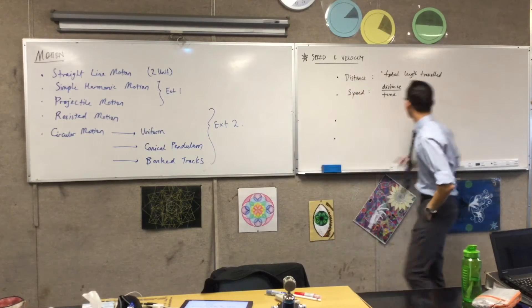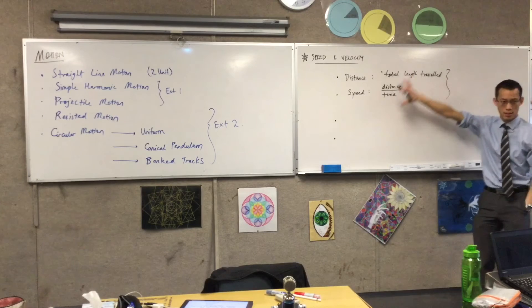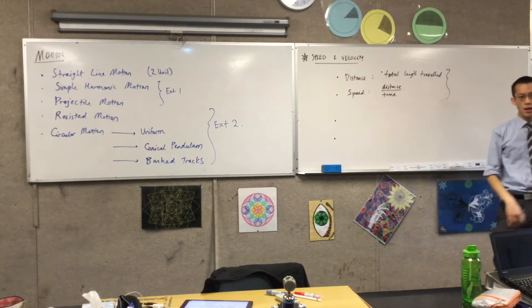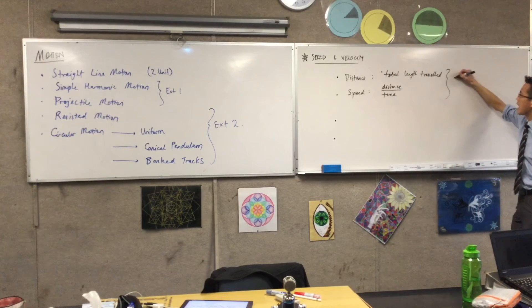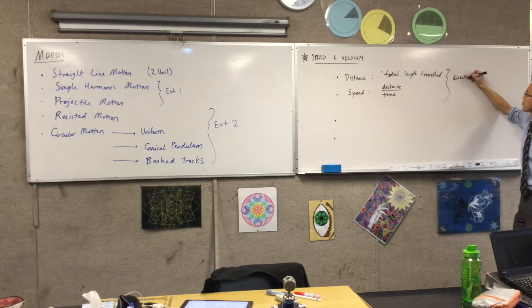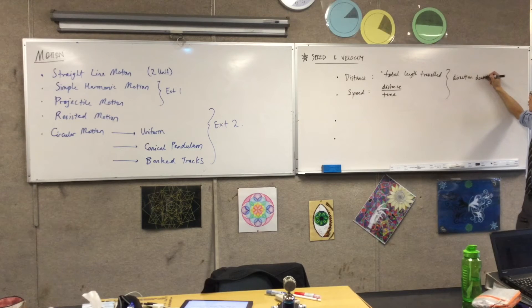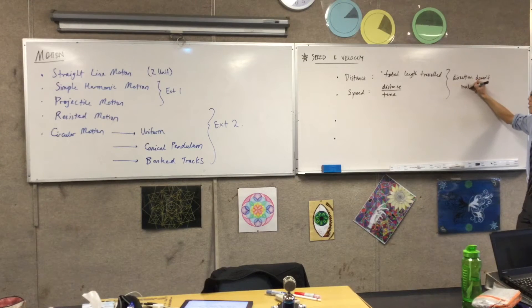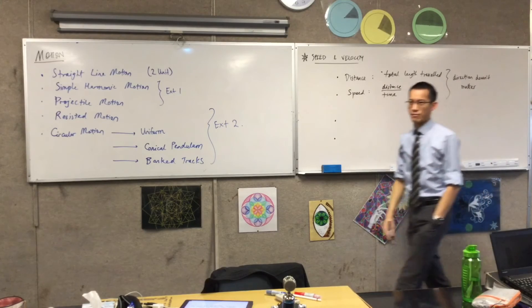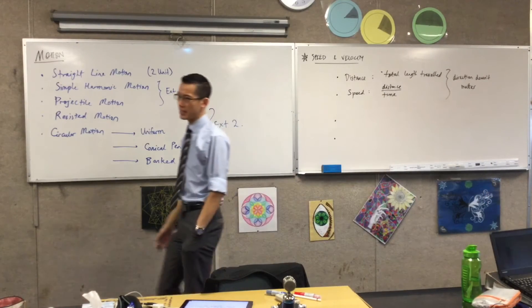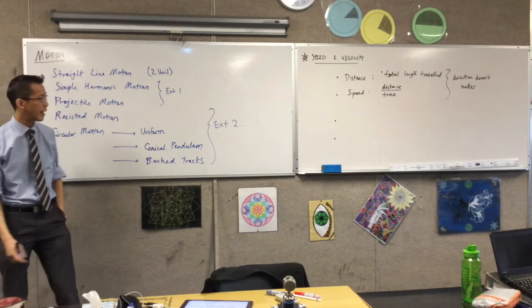Now the important thing you need to understand here, and there's a big distinction between this and the next two dot points which are parallel to it. The important thing here is that direction doesn't matter. I don't care which direction you're facing. If you're running, whichever you're facing, you're still traveling distance. So therefore you still have a speed of some kind.